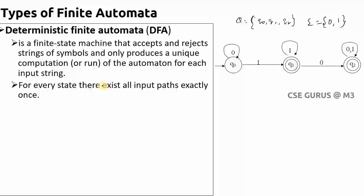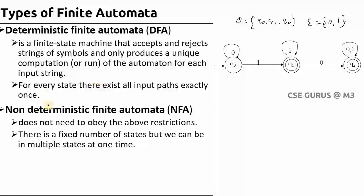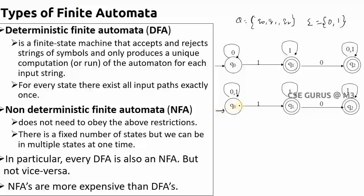On the other hand, in Non-Deterministic Finite Automata, it does not need to obey the above restriction. It can have any number of input paths and any number of output states, and for every state the input path may not even exist. For example, q0 on 0 goes to q0, but q0 on 1 goes to both q0 and q1 — so for one input you can reach multiple states.